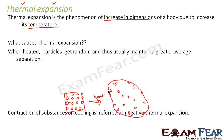Just as we said when we heat a substance it expands, similarly if we cool a substance it tends to contract — that is, a substance generally tends to decrease in size when it is cooled. This contraction of substances on cooling is referred to as negative thermal expansion.